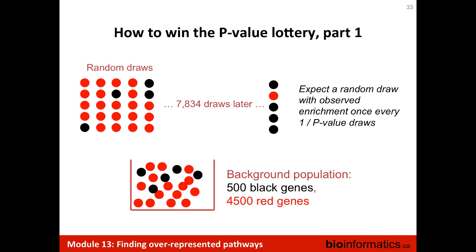When you have a particular p-value — say 0.01 — you would expect an equivalent enrichment if you try at least 100 times. If you try 100 times you'll likely see one result that looks good even in totally random data. This is the reason why you always have to think: do I need FDR? Do I need multiple testing correction? And most of the time the answer is yes.